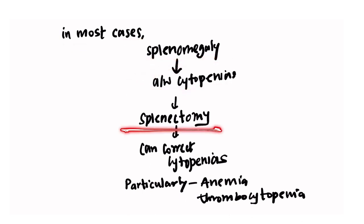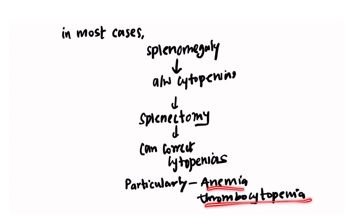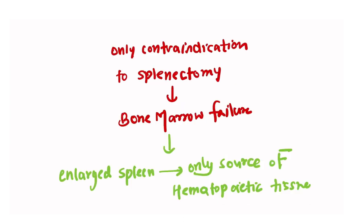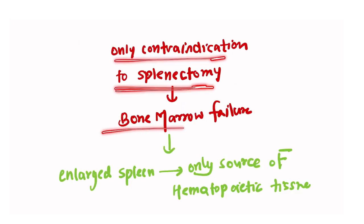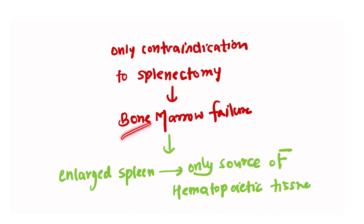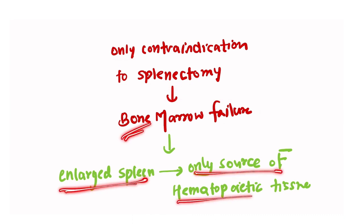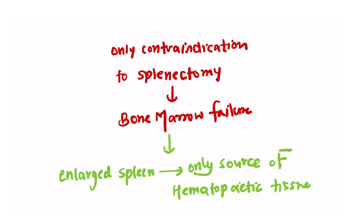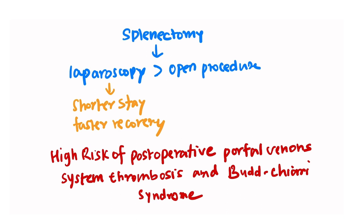In most cases, splenomegaly is associated with cytopenias, and splenectomy can correct these cytopenias, particularly anemia and thrombocytopenia. The only contraindication to splenectomy is bone marrow failure, because in bone marrow failure the enlarged spleen is the only source of hemopoietic tissue.